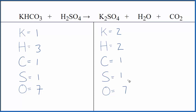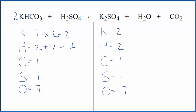We have all of our atoms counted up. Let's balance the potassium first — put a two in front of the KHCO₃. That gives us two potassiums. For the hydrogens, we need to update: two times one is two, plus the two in the sulfuric acid gives us four. We have two carbons. For oxygens, two times three is six, plus four gives us 10 oxygen atoms.